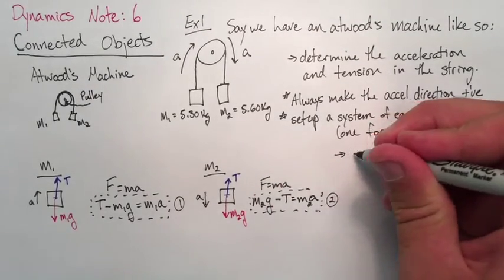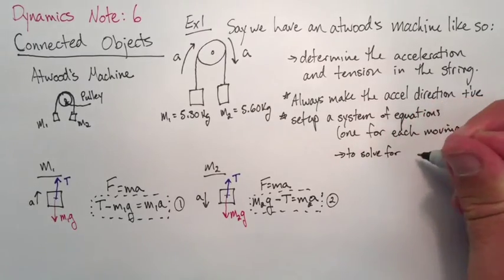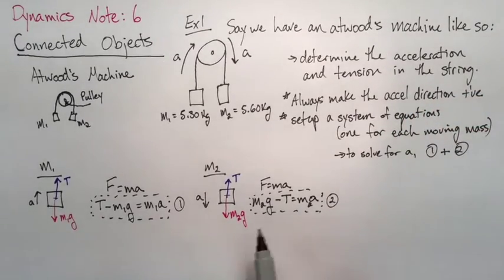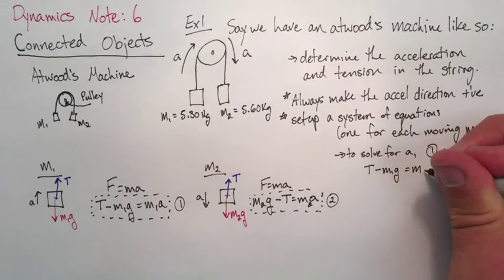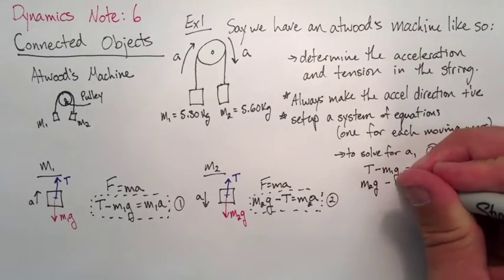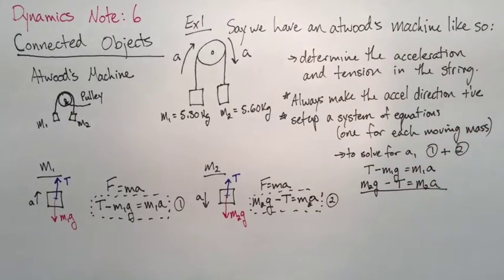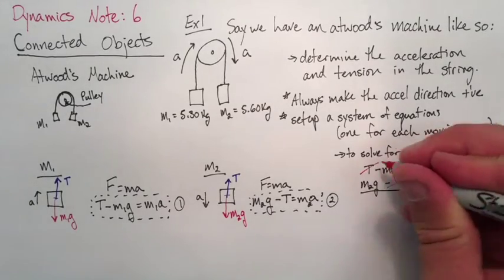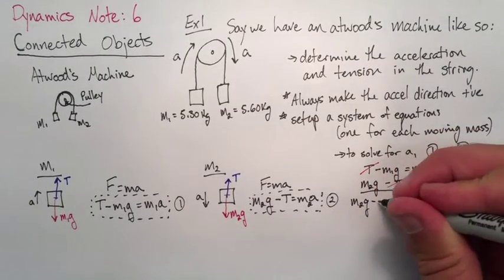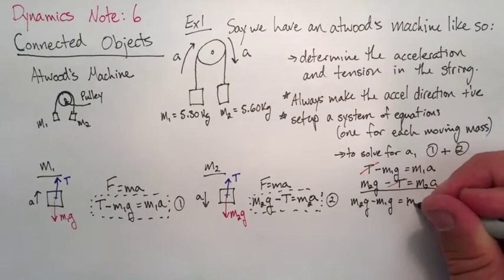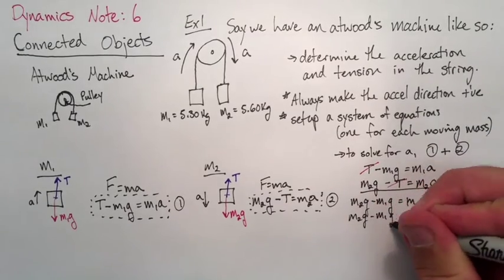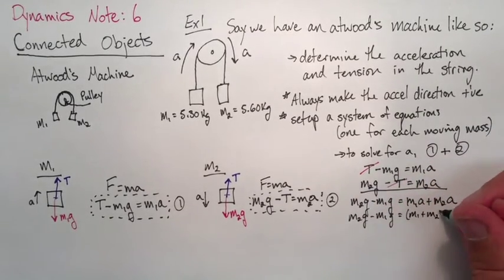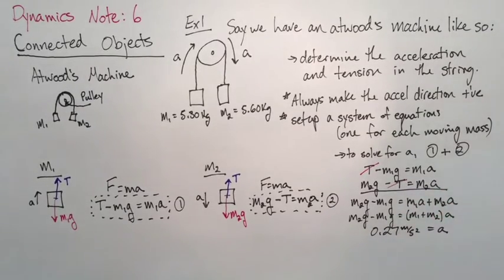We have two equations with two unknowns. So now we want to solve for acceleration using elimination. We're going to add the first equation to the second equation. We notice when we add everything, the tensions will cancel. So we get m2g minus m1g equals m1a plus m2a. We can factor out the a on the right side of the equals sign. And now we can solve for it. We find that a is 0.27 meters per second squared.